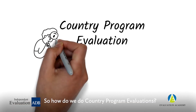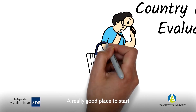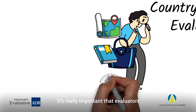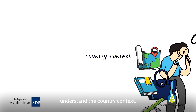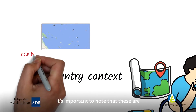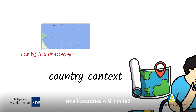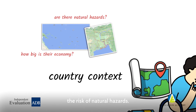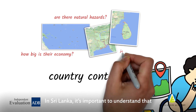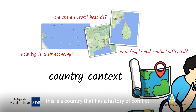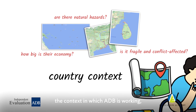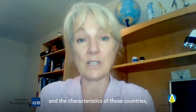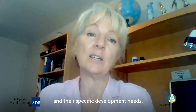So how do we do country program evaluations? A really good place to start is the country context. It's really important that evaluators understand the country context. In the Pacific, for instance, it's important to note that these are small countries with limited economic bases. In Bangladesh, it's important to understand that this is a country that faces the risk of natural hazards. In Sri Lanka, it's important to understand that this is a country that has a history of conflict. So we must understand the context in which ADB is working and the specific development needs of those countries.